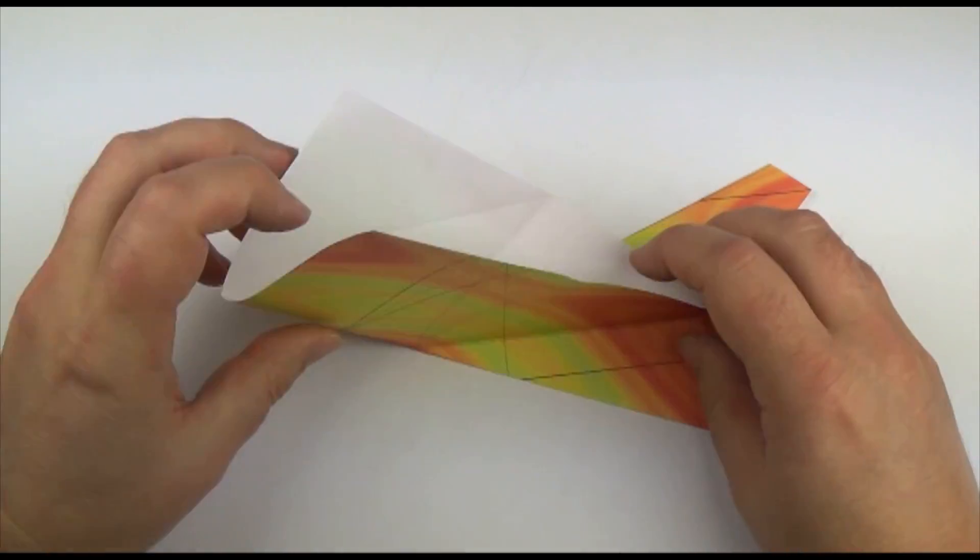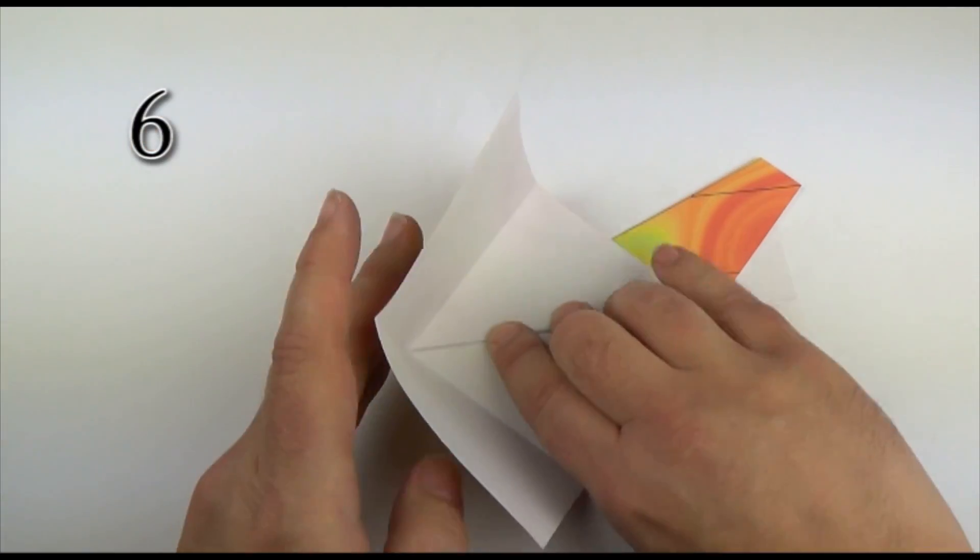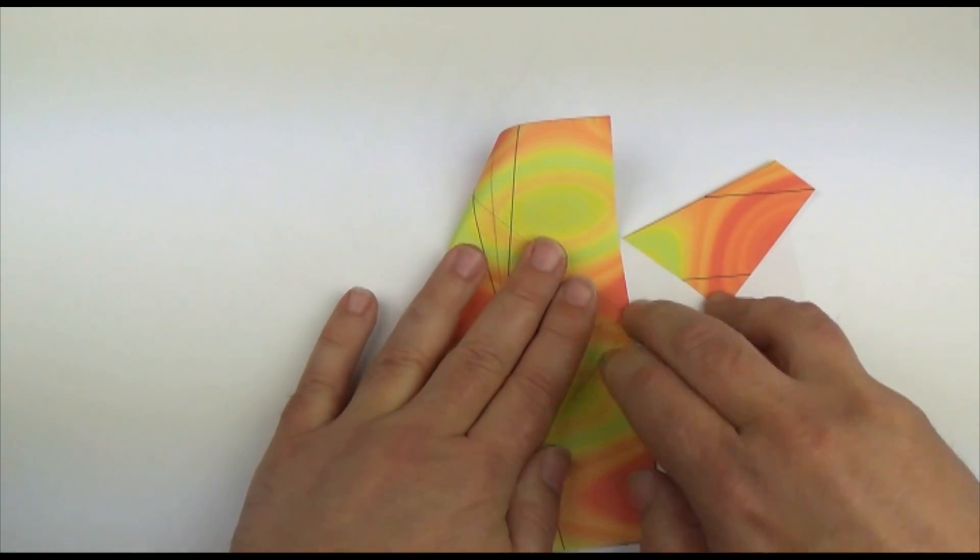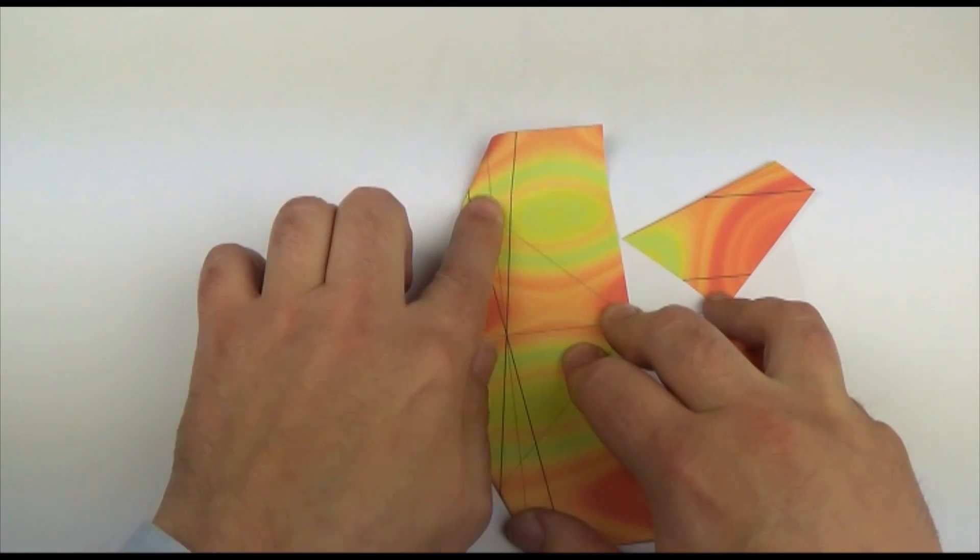Now fold this section up, open it out, and flatten. So now folding that crease over to touch the folded edge beneath.